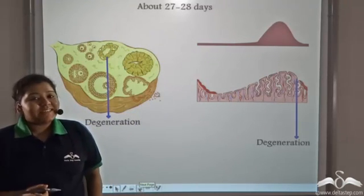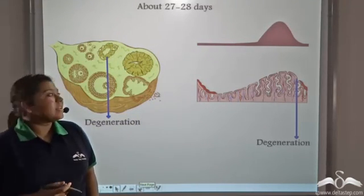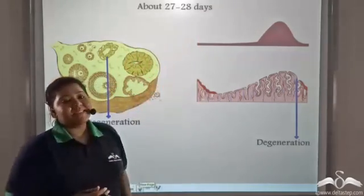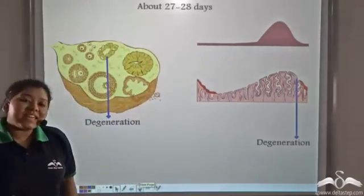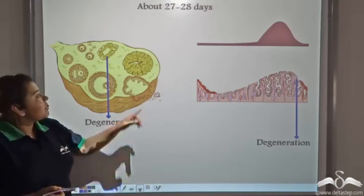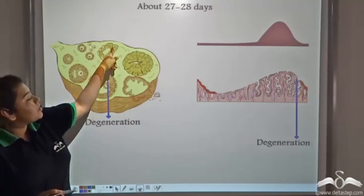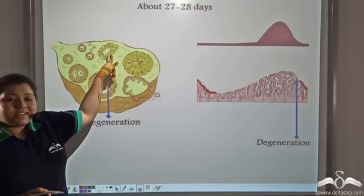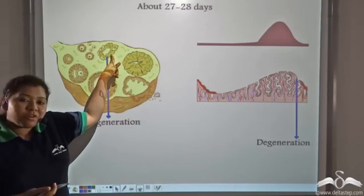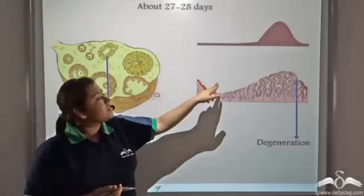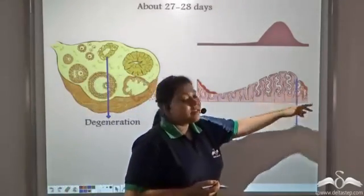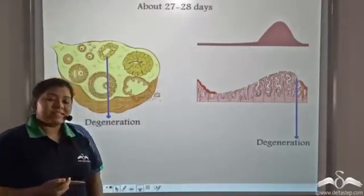If fertilization fails to take place within twenty-seven to twenty-eight days from the beginning of the menstrual cycle for that month, then the corpus luteum degenerates, and along with the degeneration of the corpus luteum, the endometrial layer is also shed.